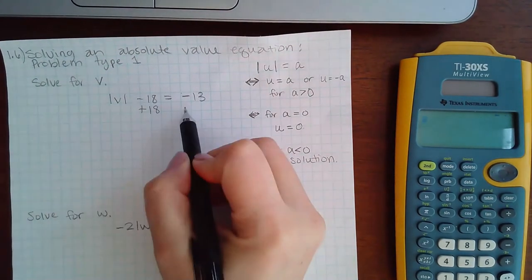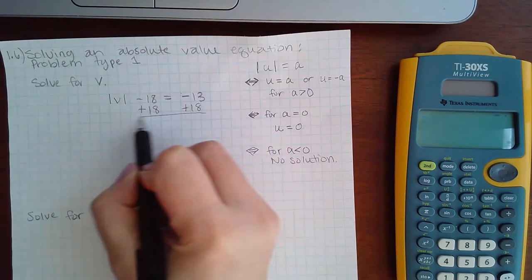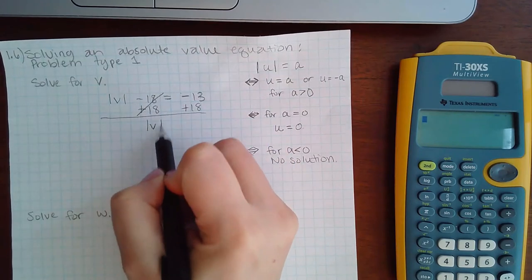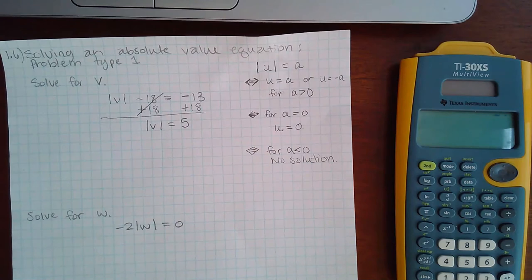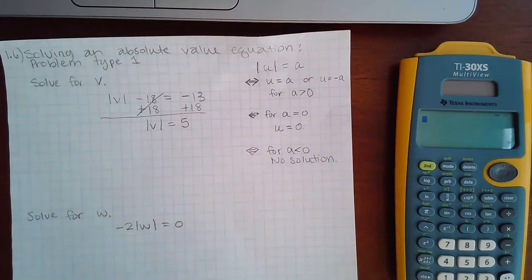But if I isolate the absolute value of v, I end up with a positive 5 on the right hand side, and now it's not this case where a is less than zero because five is actually a positive number.